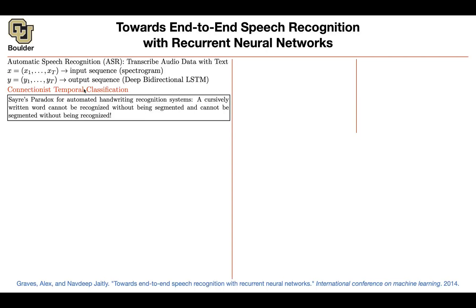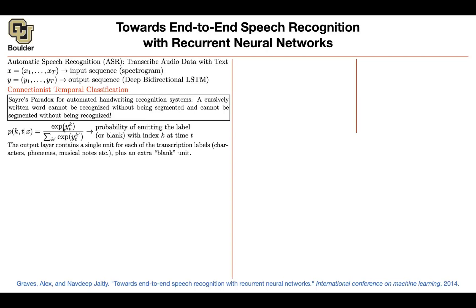For that reason, you're going to use connectionist temporal classification. We know that your neural network — whatever you do — is going to emit labels and some blanks, and then you're going to get rid of those blanks and repetitions later on. So in the end, you're going to get a bunch of label indices and a bunch of blanks out of your neural network. And that's going to be your path.